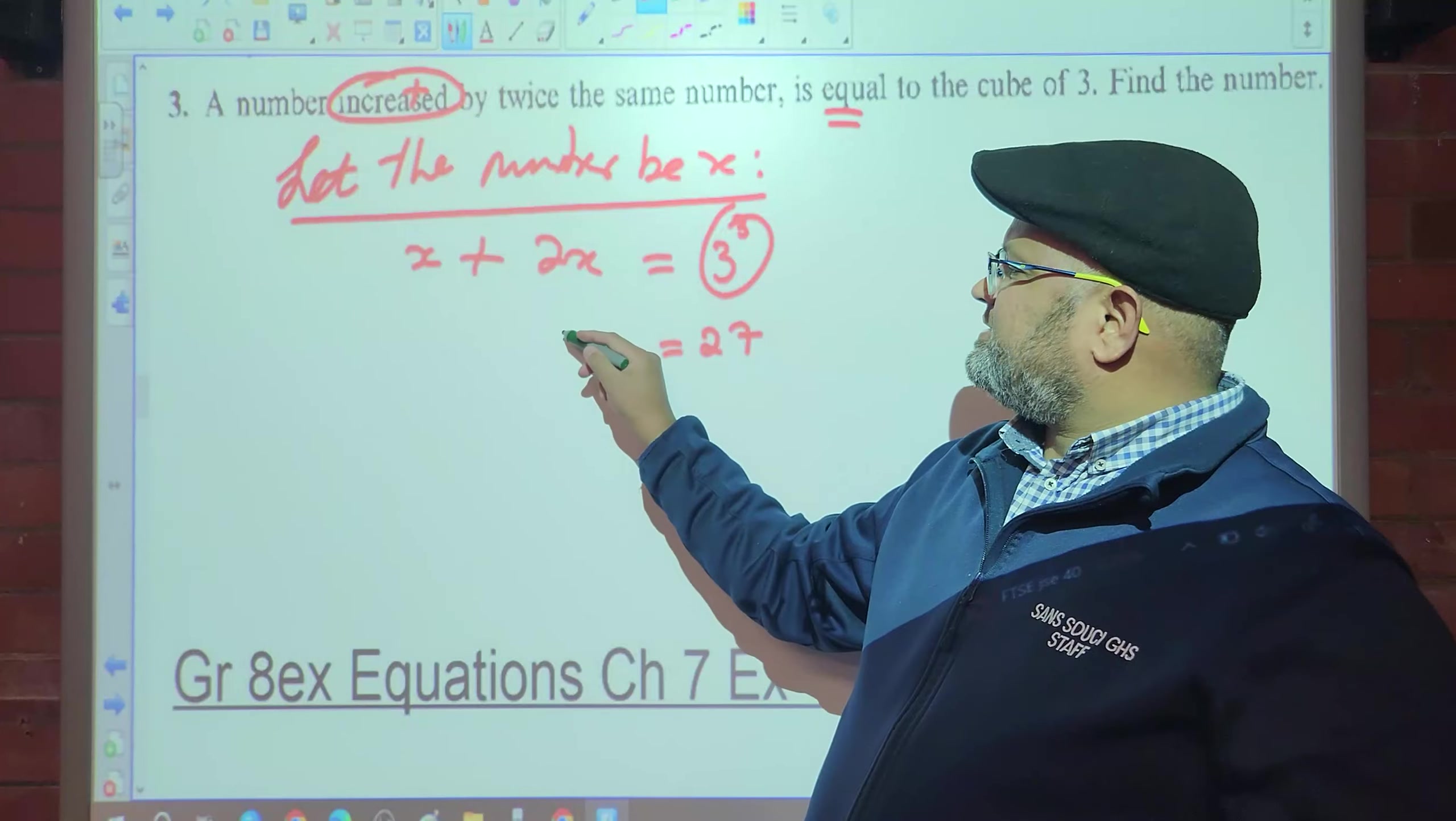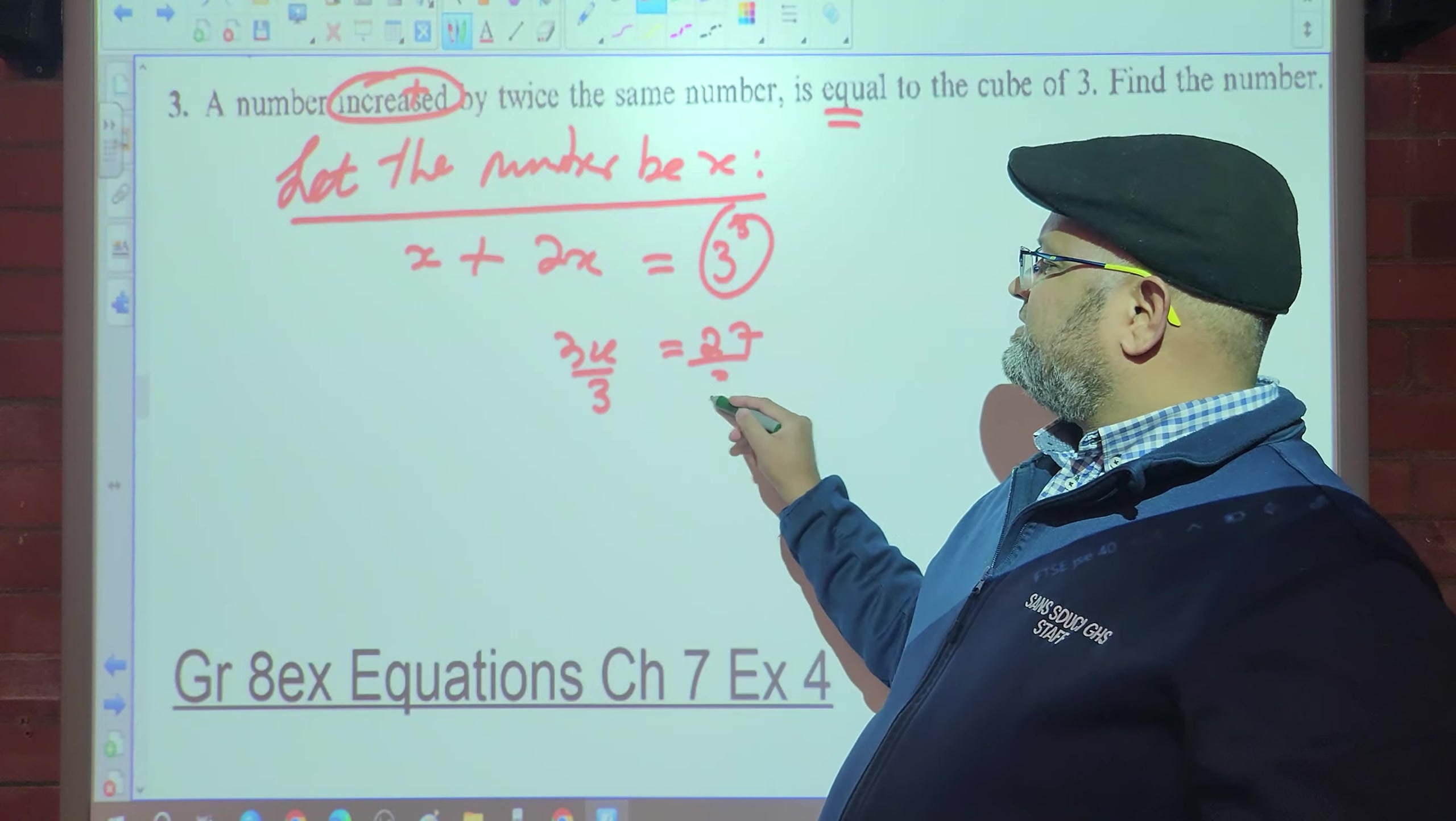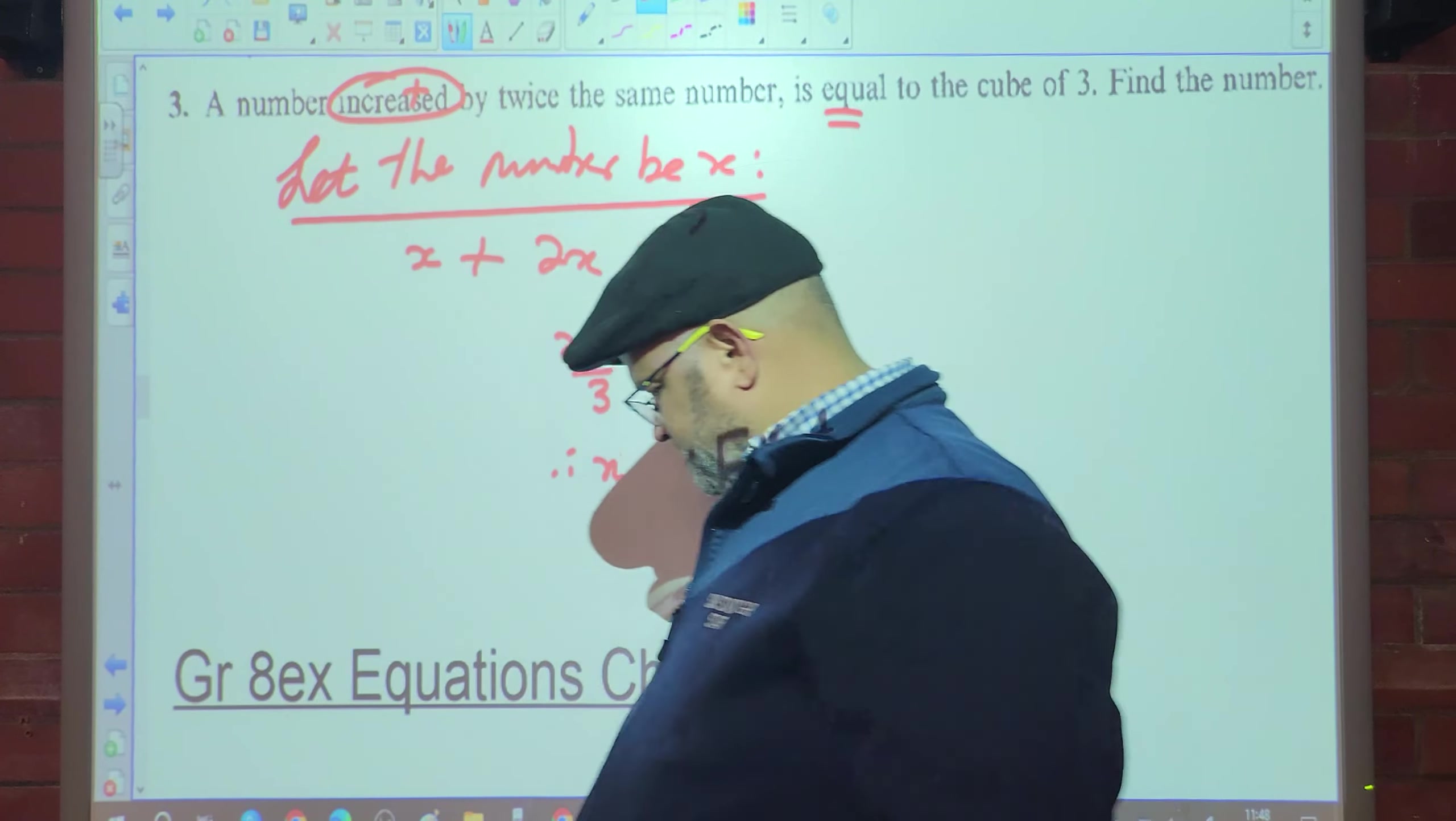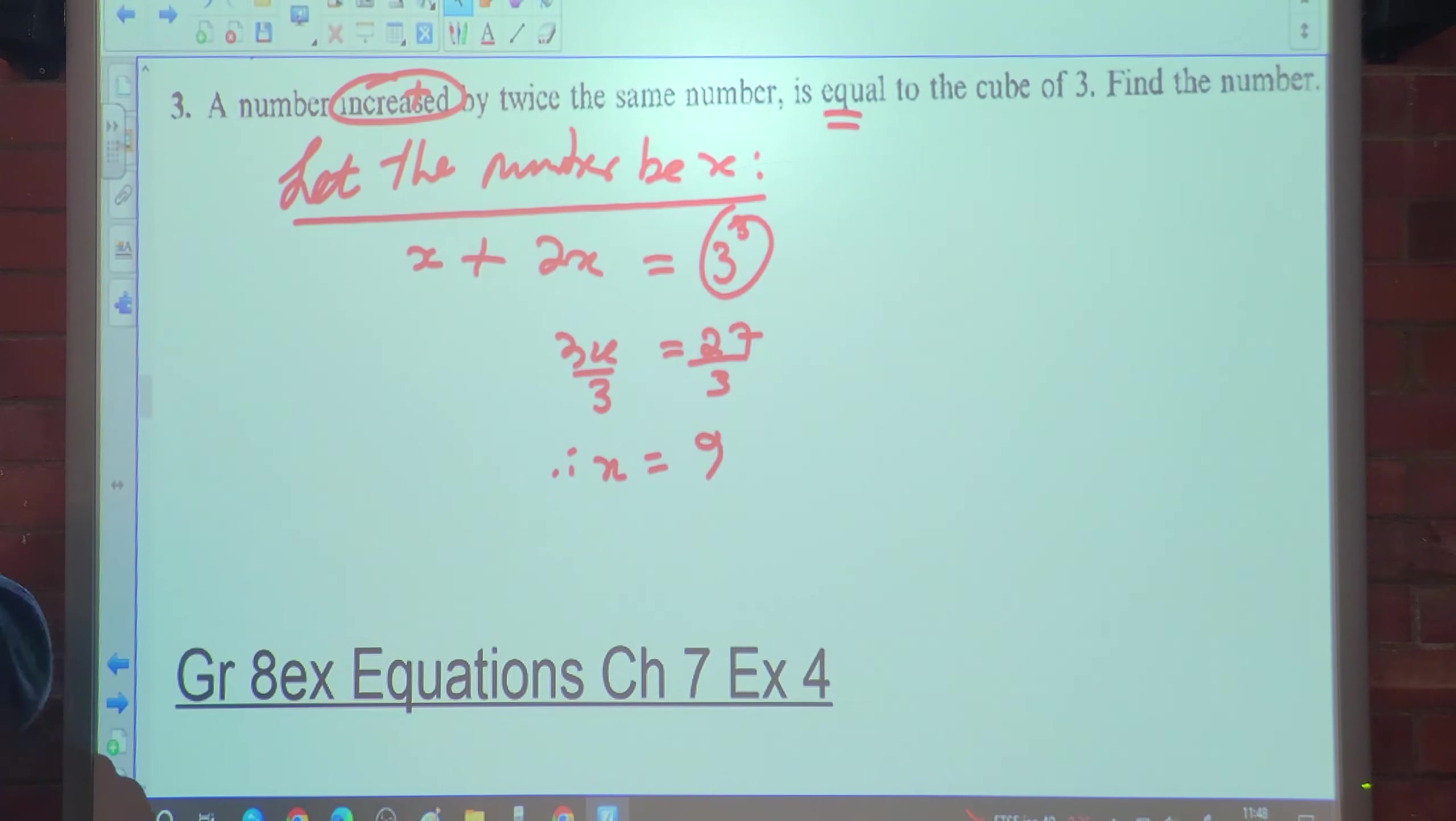2x plus x equals 27. 3x equals 27. Divide by 3 both sides, therefore x is equal to 9. Any confusion?